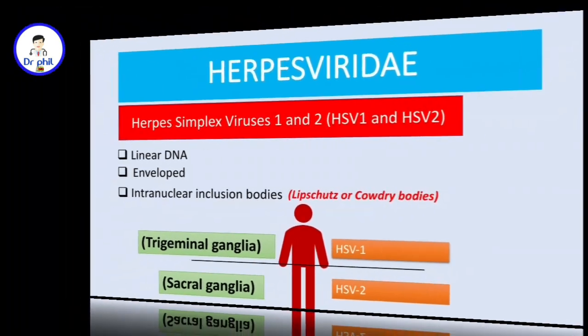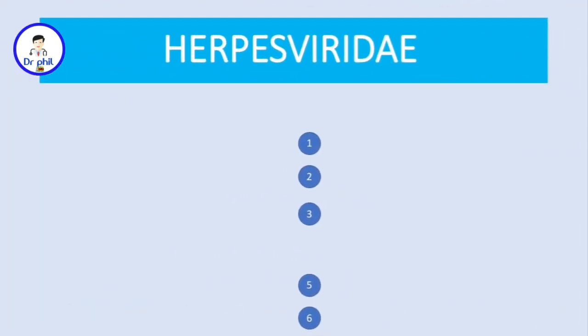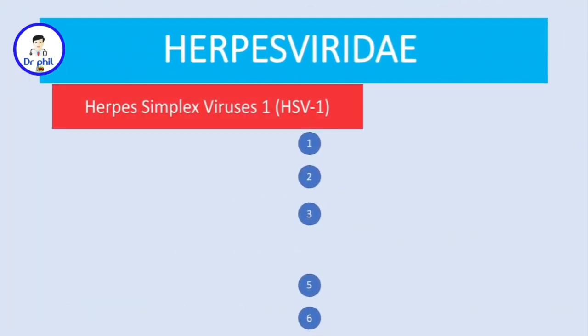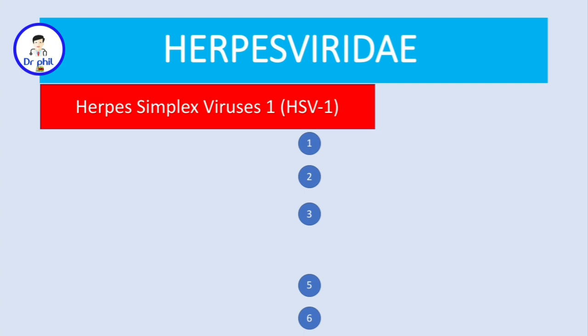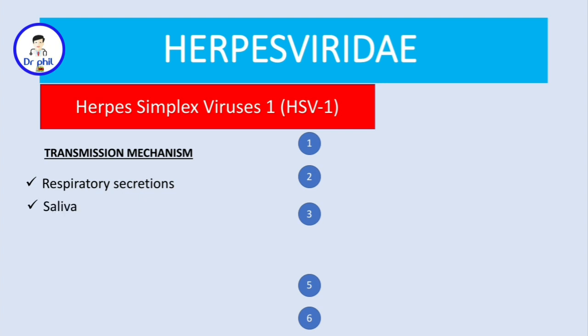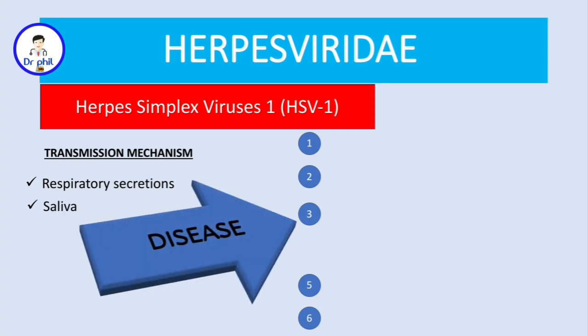Now let's start with herpes simplex 1. The transmission mechanism of herpes simplex virus 1 is usually through respiratory secretions and saliva. There are about six diseases which you need to remember, and we'll discuss them one by one.